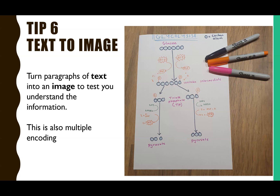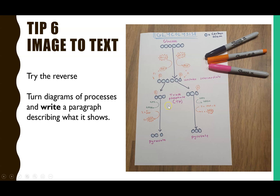Tip six: turning text into an image, or the reverse. After reading a paragraph about glycolysis in respiration, instead of recopying notes I've turned that text into an image — an active recall strategy that checks understanding and provides multiple encoding. You can also do it the other way: take a diagram and turn it into a paragraph. For glycolysis I could write: 'Glycolysis starts with glucose, which has six carbon atoms, reacted with two ATP molecules that are hydrolysed, and the inorganic phosphate is added to make a six-carbon unstable intermediate,' and so on.